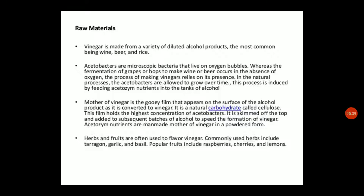Now let's look at flavoring of vinegar. We use herbs and fruits to add flavors to vinegar, such as garlic, basil, tarragon, raspberry, cherry, lemon, etc. The raw materials used for vinegar production include alcoholic beverages like wine, beer, and rice wine. The key organism in vinegar production is Acetobacter, which is an aerobic organism.